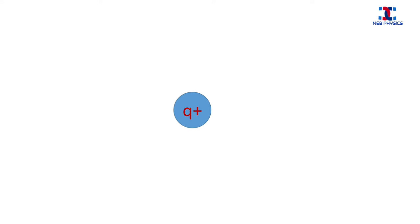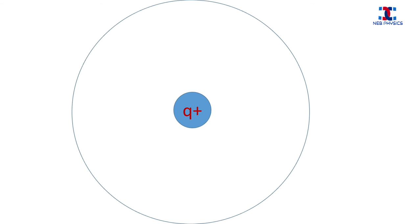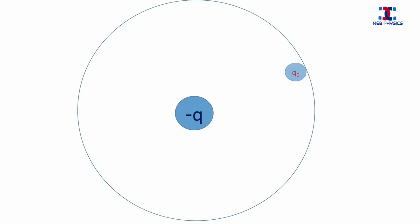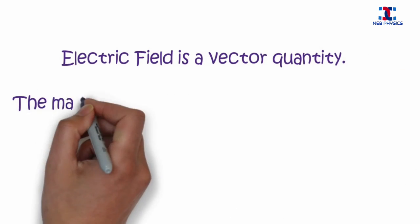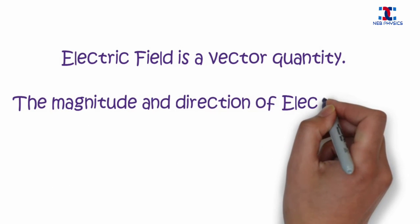If it is a positive charge, then the electric field is formed such that when a test positive charge is kept in it, it experiences the force of repulsion. Whereas a negative charge will develop an electric field such that when a test charge is kept in it, it experiences the force of attraction.